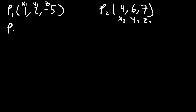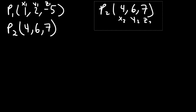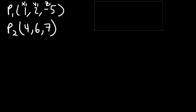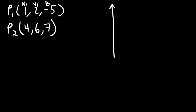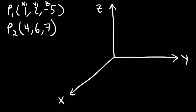Now let's plot these two points so we can understand another way to get the answer and see it visually. This is going to be the z axis, here we have the y axis, and this is the x axis.